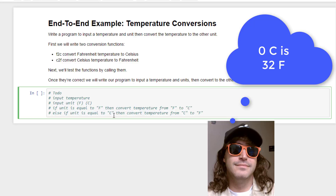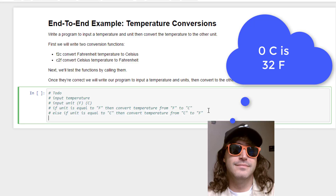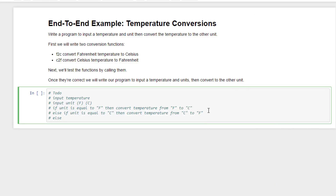For example, you enter 0 degrees Celsius and I say that's 32 degrees Fahrenheit. And then if you enter anything else, like a W or an X or a Z, I'm just going to print that I can't convert that. So that's my logic. Now, what I don't know how to do is convert from Fahrenheit to Celsius or from Celsius to Fahrenheit. I don't know how to do that yet. I'm sure I can Google that and figure it out.